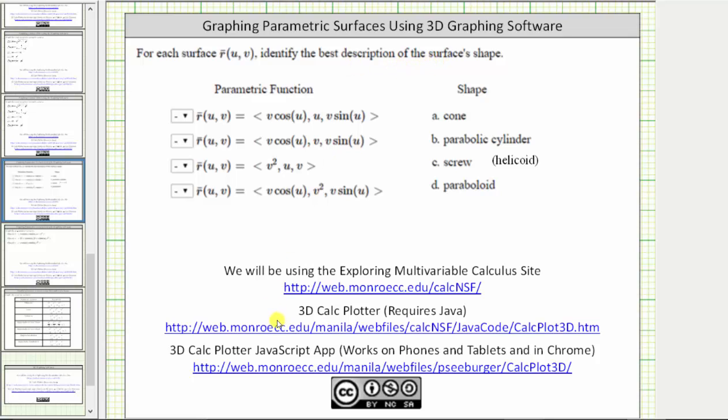We will be using the 3D Calc Plotter from the Exploring Multivariable Calculus site shown here. There are two options. The first option requires Java, which will not work in all browsers. We'll be using the 3D Calc Plotter JavaScript app, which works in most browsers, as well as phones and tablets.